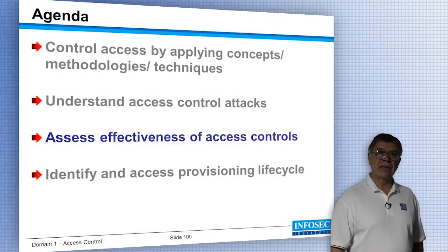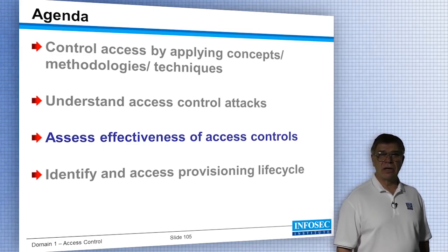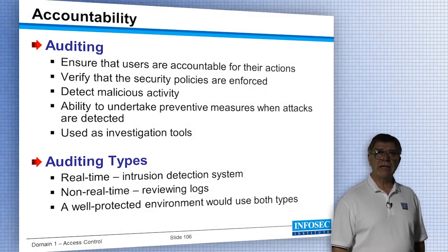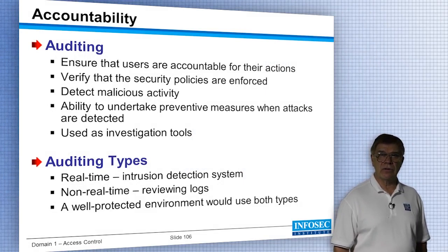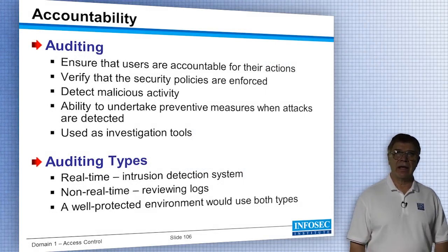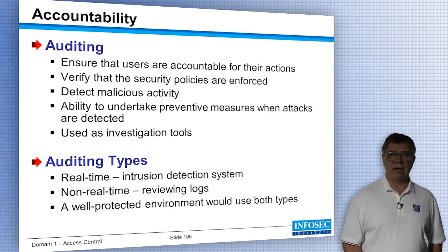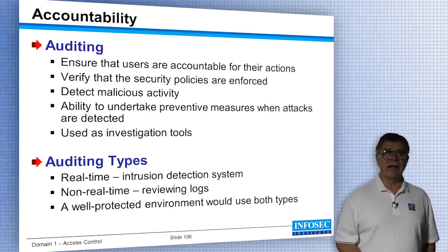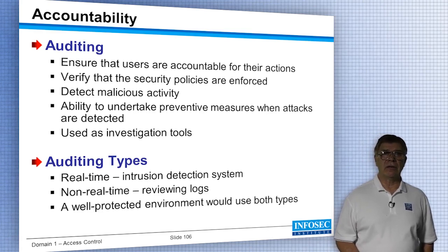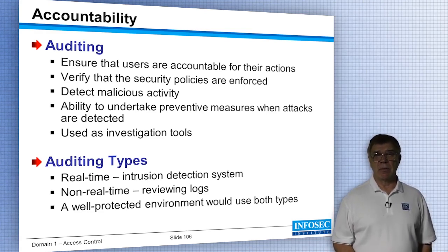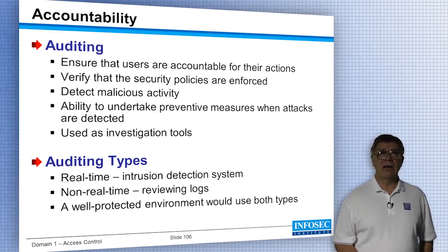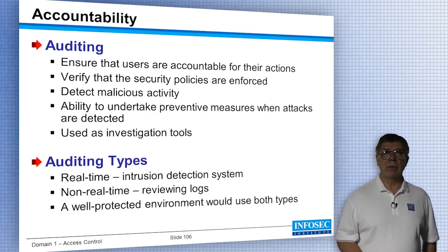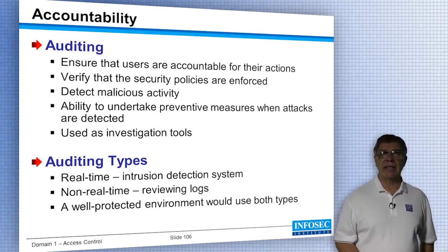Now let's look at how you can assess the effectiveness of other access controls. First, there needs to be accountability — we need to make sure users are accountable for the actions they take. You do that by logging activity, then verifying the entries in the log to see that security policies are being enforced and followed. You look at those logs to see if there's any malicious activity — is a user going after files they shouldn't be trying to access? You also use log files as a preventative measure when you detect an attack, such as a brute force attack against a password file, and as an investigative tool to follow every action taken against that data or object.